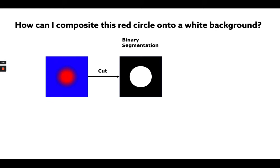First, we all understand that we need to cut out the red circle. So we could try a binary segmentation. And then if we try to do a naive paste with this binary segmentation, we obviously end up with a very ugly result.